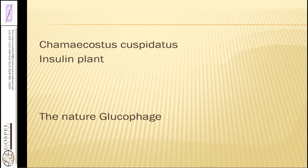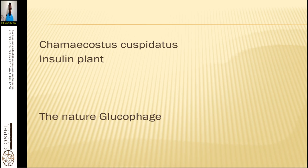Today we have a wonderful herb that is growing almost everywhere. If it is not in your place, it is because you have not researched or had a desire to look for it. It is called the insulin plant, and in botanical terms it is called Chamaeacostus cuspidatus. This is how it is known — as a nature glucophage.